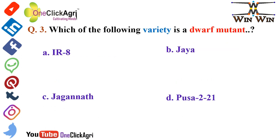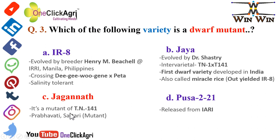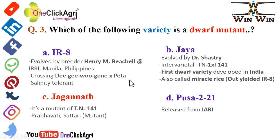Which of the following variety is a dwarf mutant? The right answer is Jagannath variety, and it is a mutant of TN141. Two other mutant varieties of rice are Prabhavati and Sattari — please remember these. The first option, IR8, was evolved by breeder Henry M. Beachell at the International Rice Research Institute, Manila, Philippines. IR8 is a cross between Dee Geo Woo Gen into Peta — please remember this.